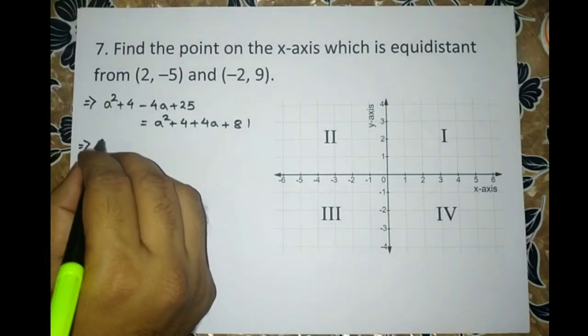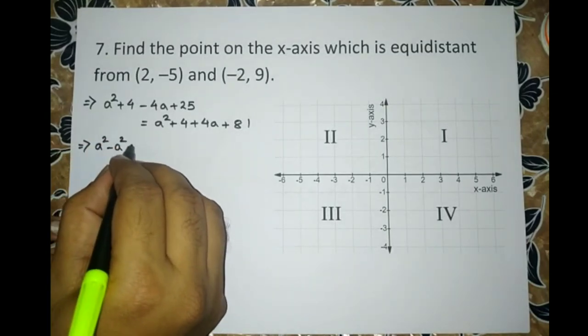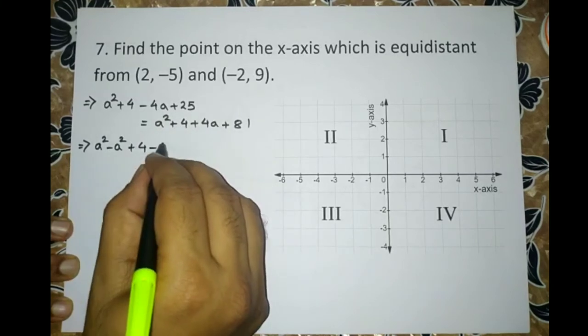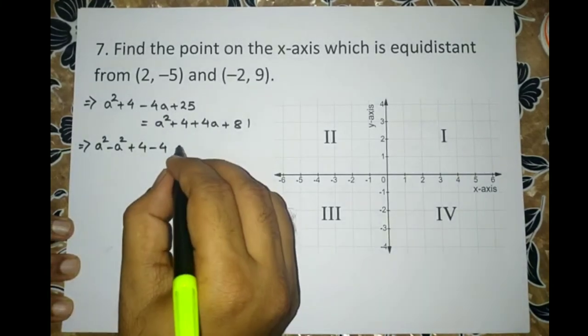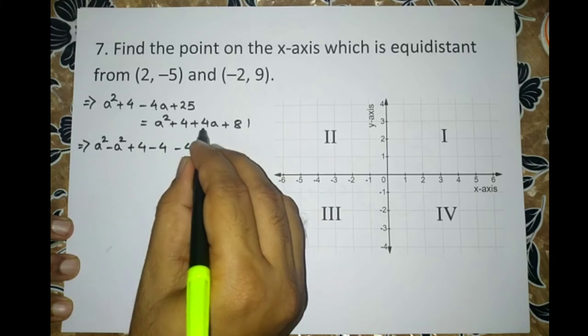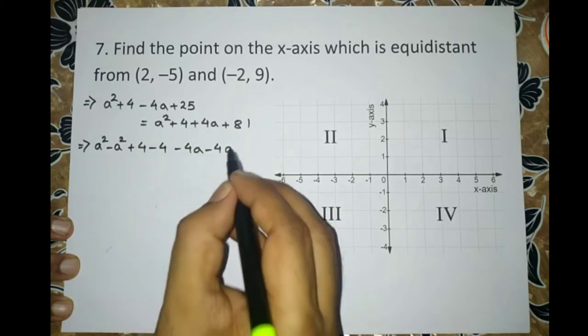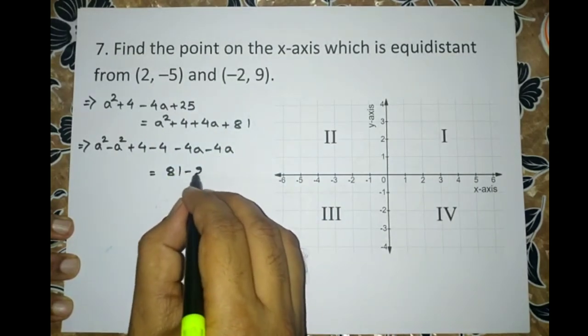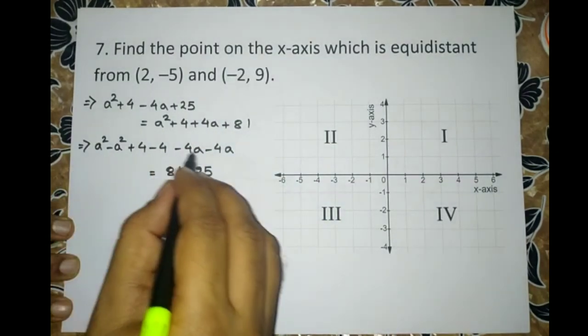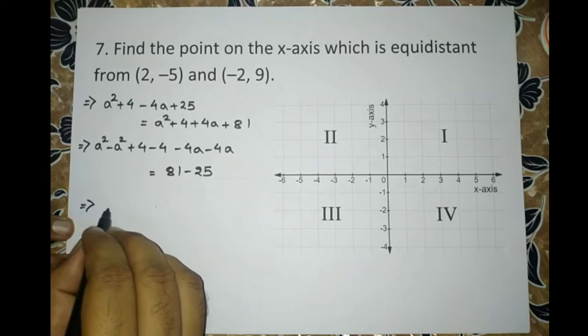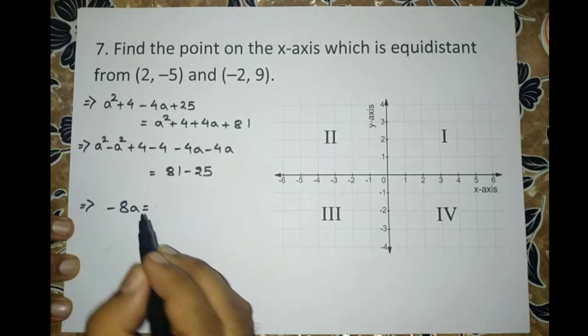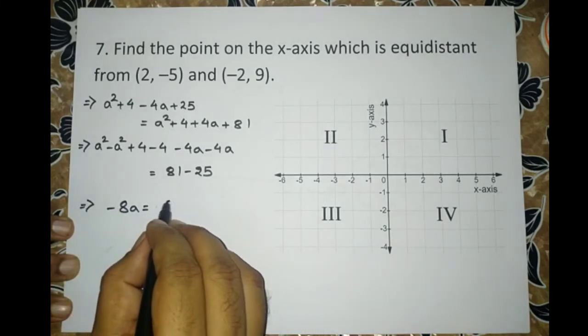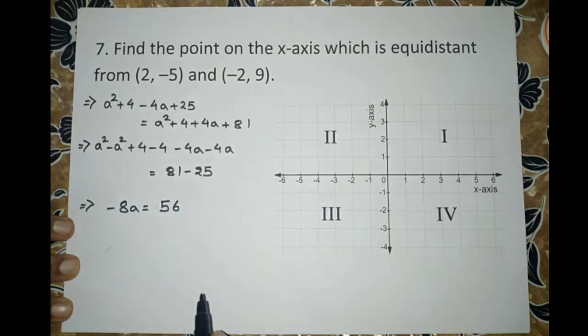So A square and 4 got cancelled. Minus 8A equals 56. So A is equal to 56 divided by minus 8.